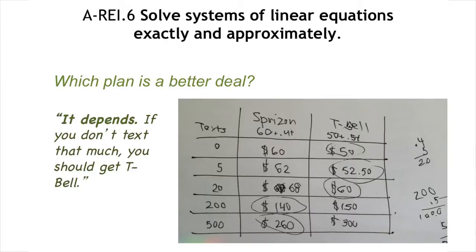But what if another student made a table and plugged in some values for different numbers of text messages? They decide that it depends. If you don't text that much, you should get T-Bell. There's a lot of richness in that work.